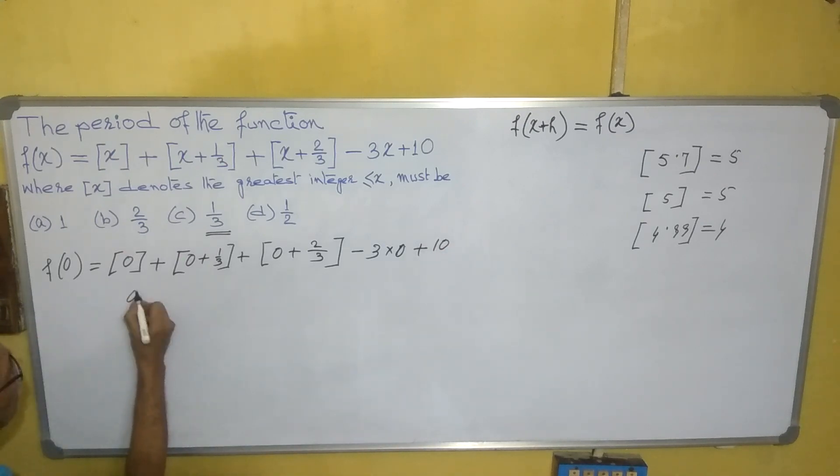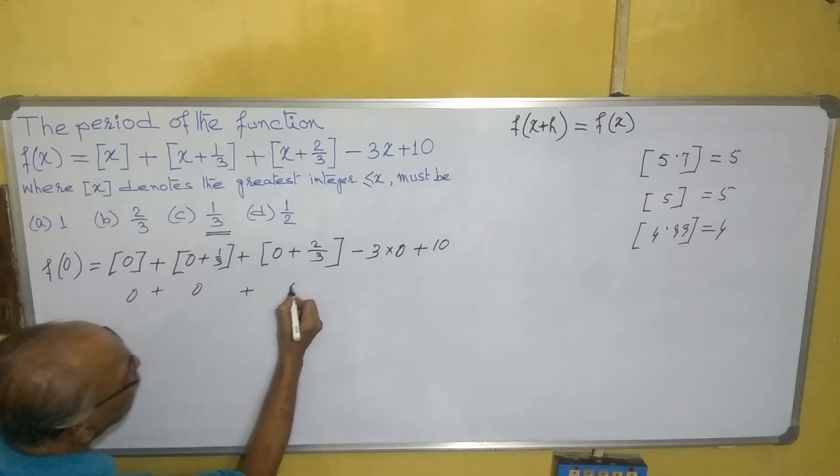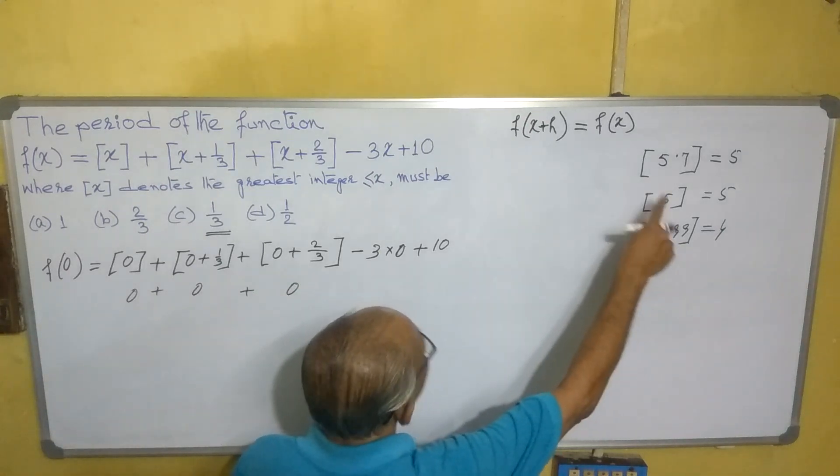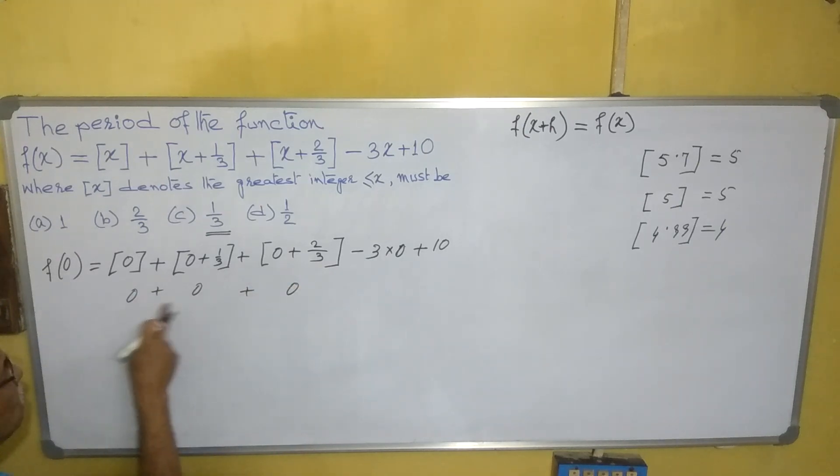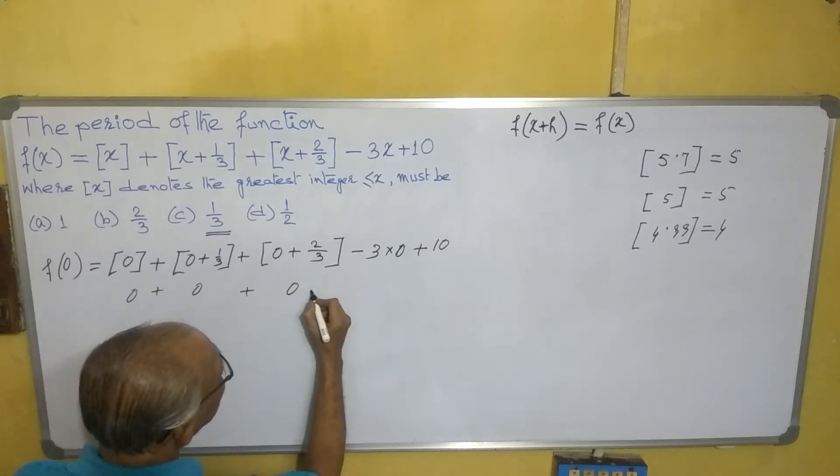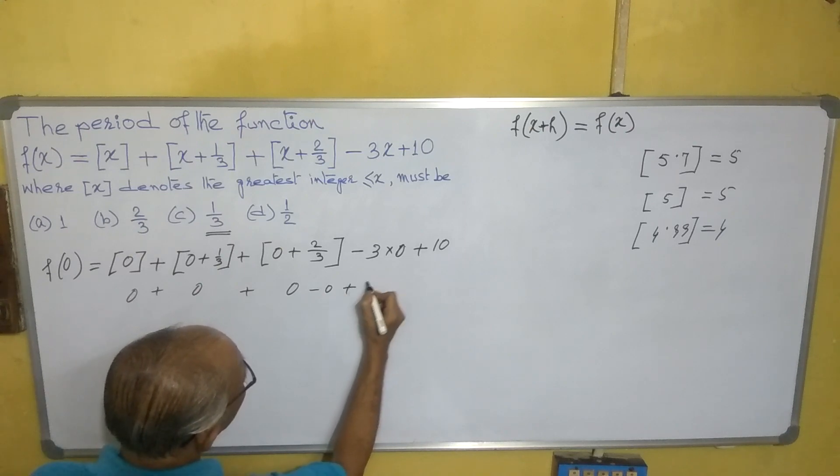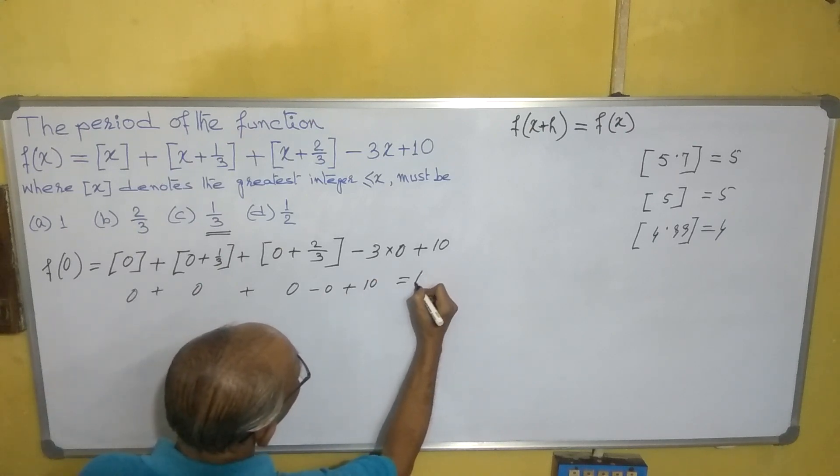This one we are taking 0. This one is also 0. This is also 0. From here we are getting 0 plus something. So the greatest integer is 0. So it is 0 + 0 + 0 - 0 + 10. So f(0) = 10.